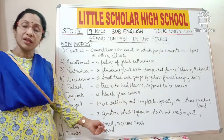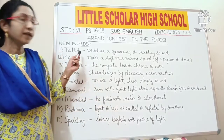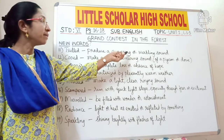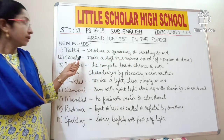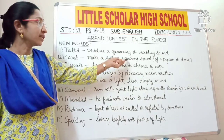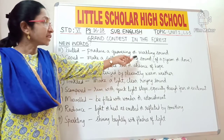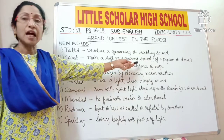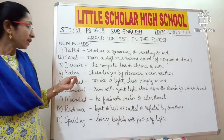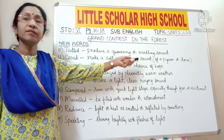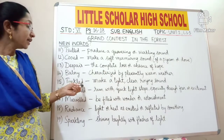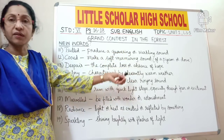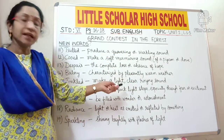Tumbled — to collapse or having fallen down. Trill — to produce a quavering or warbling sound, like a soft sound made by birds such as the lark. Coo — to make a soft murmuring sound, usually referred to the sound made by the pigeon or dove. Despair — the complete loss or absence of hope. Balmy — characterized by pleasantly warm weather. Tinkled — to make a light, clear and ringing sound; for example, when a coin falls down it makes a light ringing sound, that is a tinkled sound.